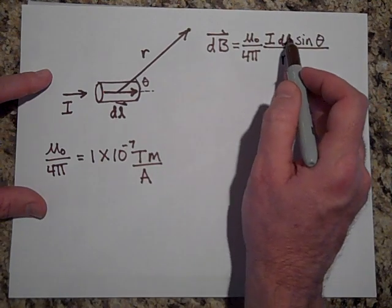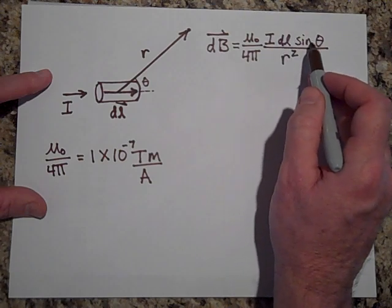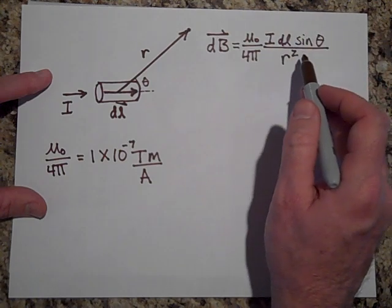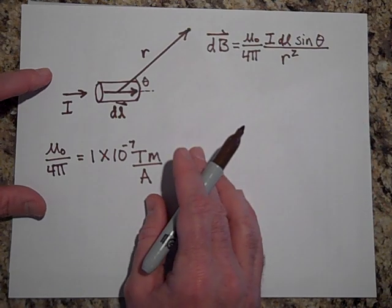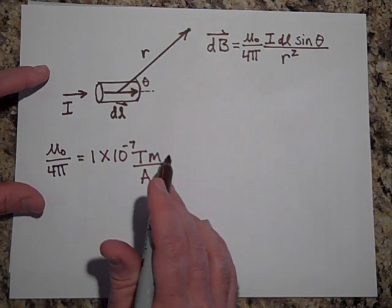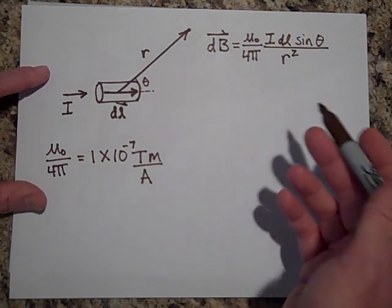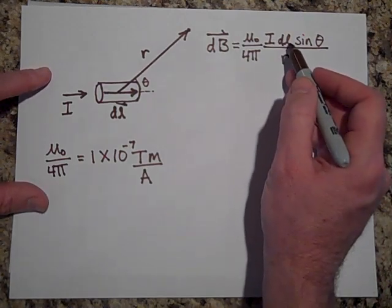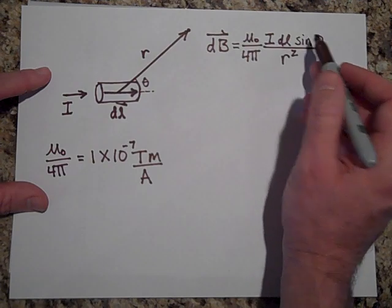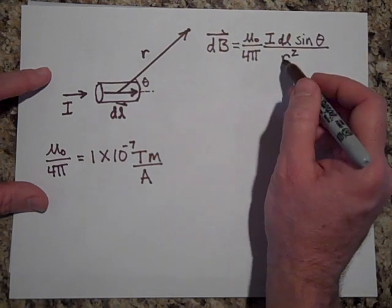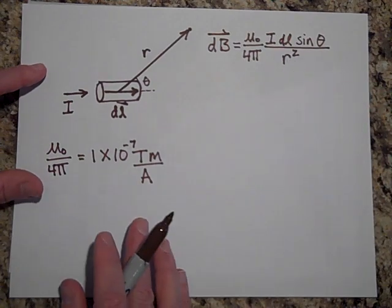You could say it's IDL, that vector cross R, and then you would have an R cubed down here. Another way to do that also is to use a unit vector, and I won't go into that, but maybe your book has IDL cross a unit vector, and the unit vector has a magnitude of 1, so that's why that's still just R squared down here.